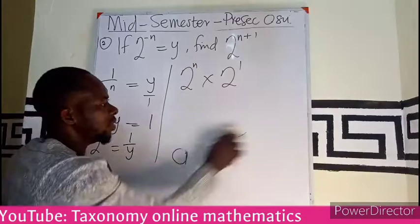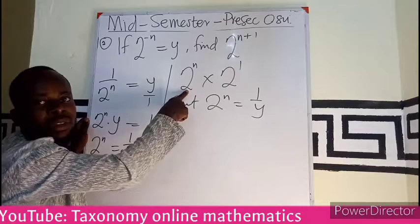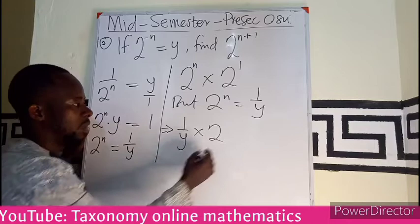We know that 2 exponent n equals 1 over y. So whenever I see 2 exponent n, I replace with this. So this is just going to be 1 over y times 2 exponent 1, which is the same as 1. So this will give me 2 times 1, which is 2 over y.